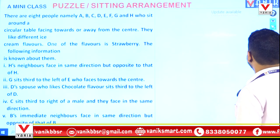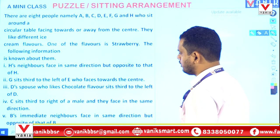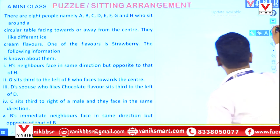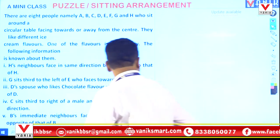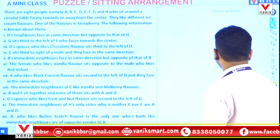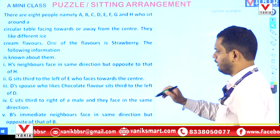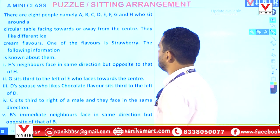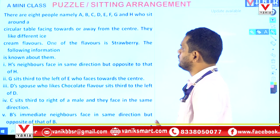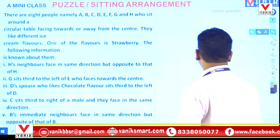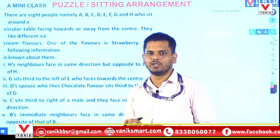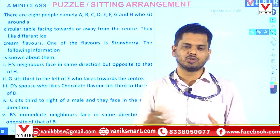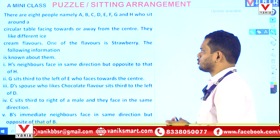Here is the first part of this puzzle. There are 12 points total to solve — five in the first slide and the rest in the next. The first point: there are eight people namely A, B, C, D, E, F, G, and H who sit around a circular table facing towards or away from the center. It's a slightly typical question because number of persons, blood relations, and inside-outside confusion are all given.